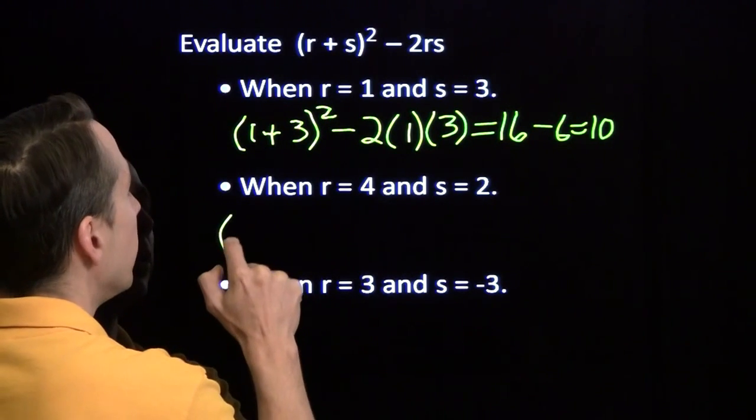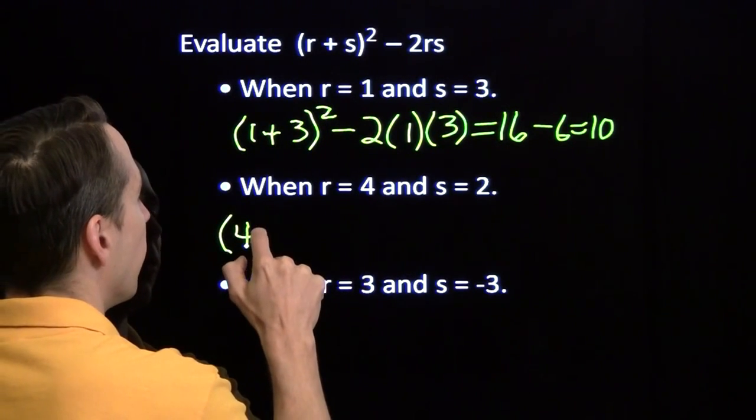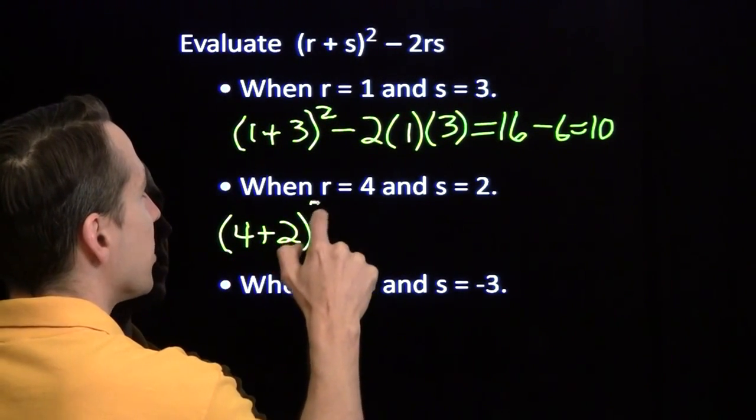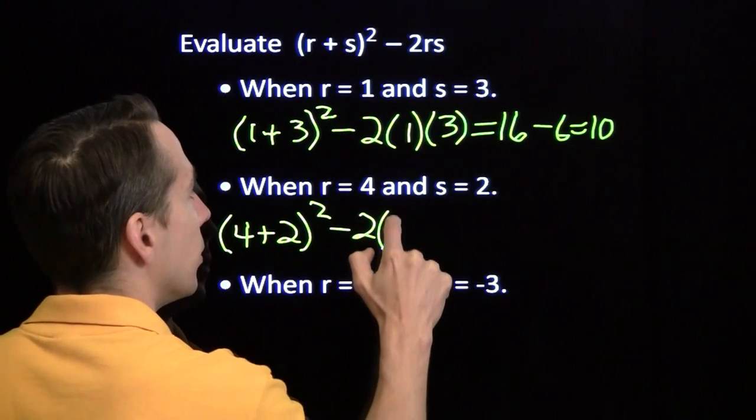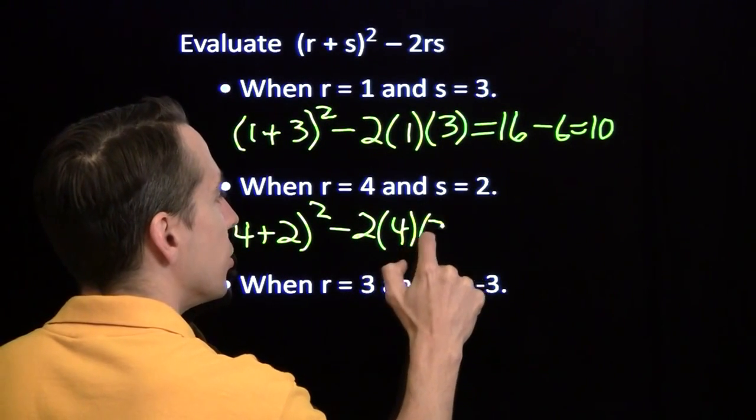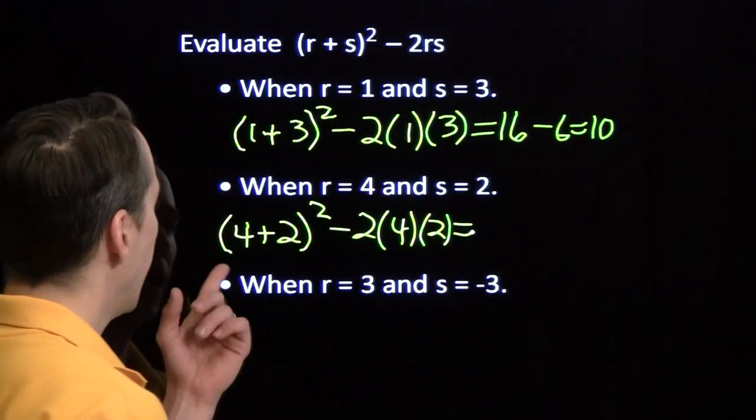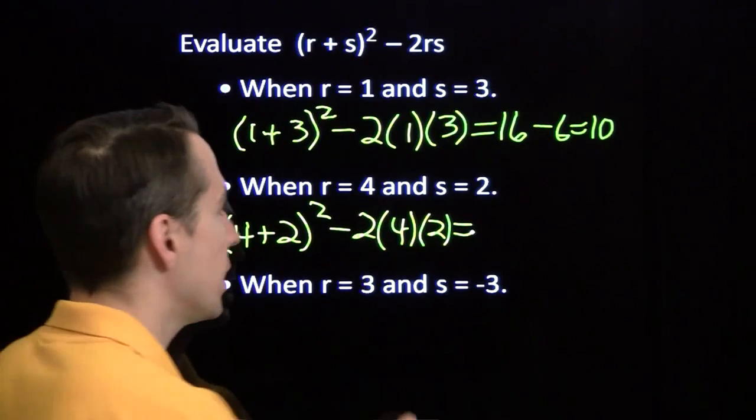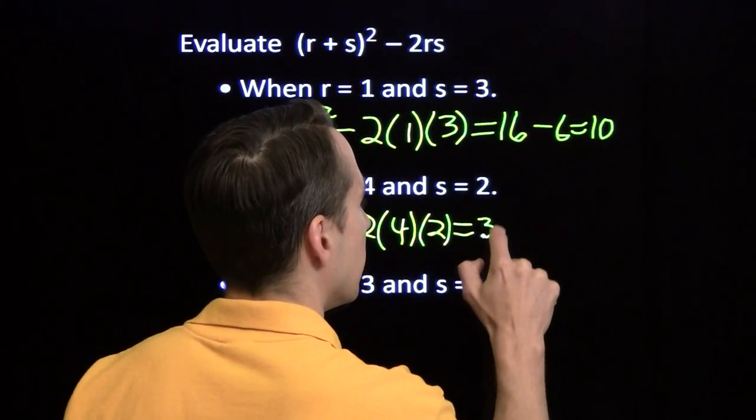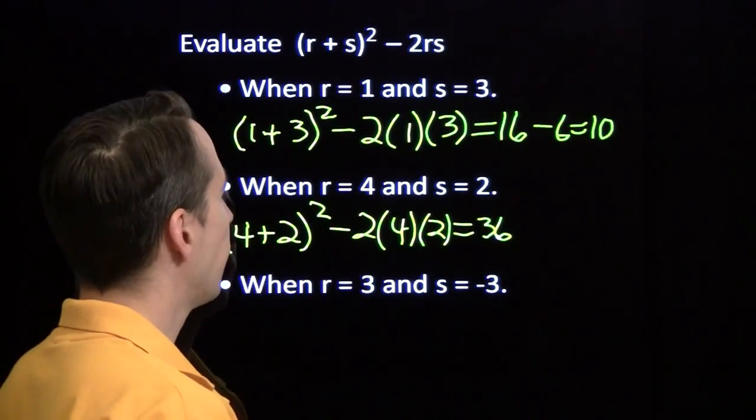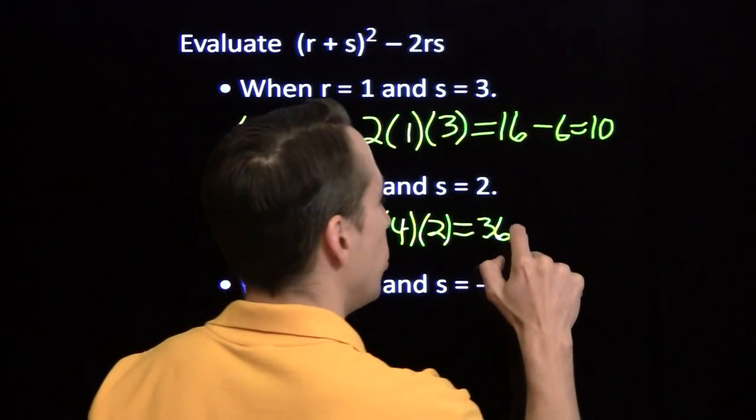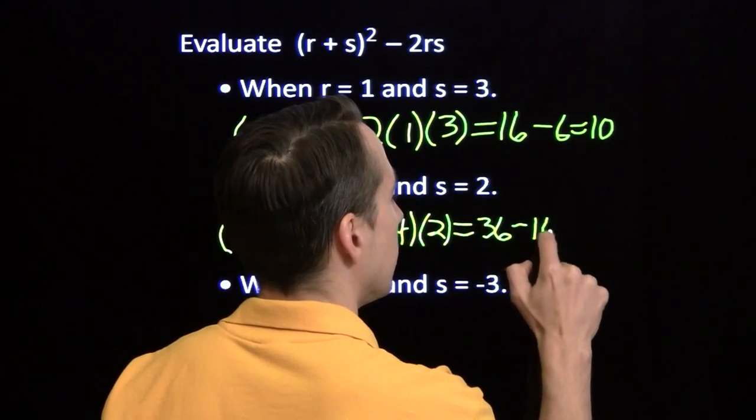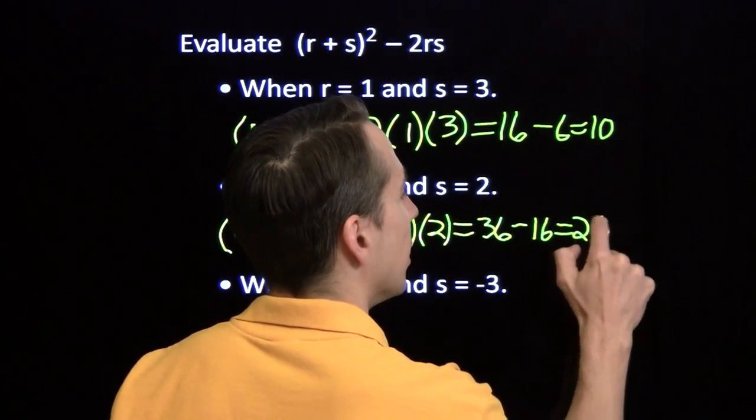So we'll do the same thing down here. Put in 4 for R, 2 for S. 4 for R, 2 for S. And 4 plus 2 is 6. 6 squared is 36. 2 times 4 is 8. 8 times 2 is 16. 16. And we get 20.